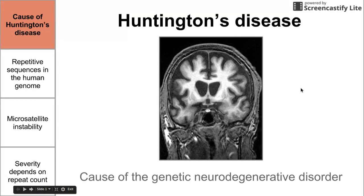This is a short video on the cause of Huntington's disease, which is a neurodegenerative disorder. This video is going to cover the genetic basis behind the disease. You can see the two large lesions formed in the brain as a result of Huntington's disease, and we're going to be talking about why these large protein aggregates form.